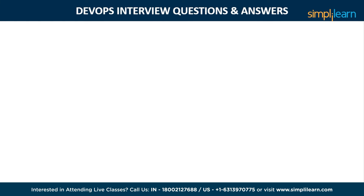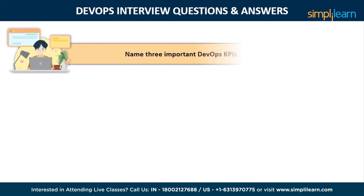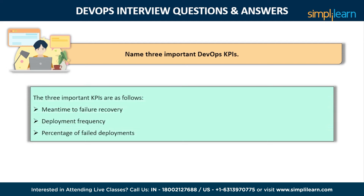The sixth question is: name three important DevOps KPIs. The three very important KPIs are as follows. Mean time to failure recovery — the average time taken to recover from a failure. Deployment frequency — the frequency in which deployment occurs. And the percentage of failed deployments — the number of times a deployment fails.